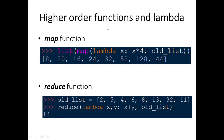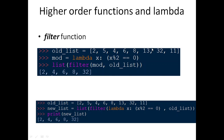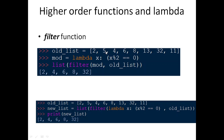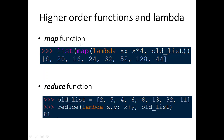Another higher order function is map. It also takes a lambda function and a list. If we want to multiply all values in the old list by 4, we use: new_list = list(map(lambda x: x * 4, old_list)). Each value in the list is multiplied by 4 — so 2 becomes 8, 5 becomes 20, and so on. This is the map function, which is also a higher order function.